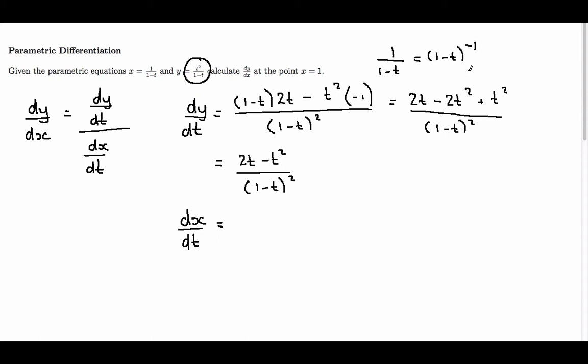In doing so, I can find dx/dt. It becomes minus 1, because I bring the power down the front, times (1 minus t) to the minus 2, because I take 1 off the power, and then I multiply by the derivative of what's inside the bracket, which is minus 1.